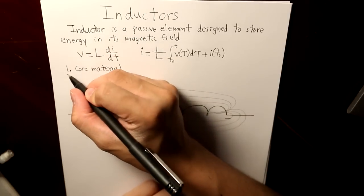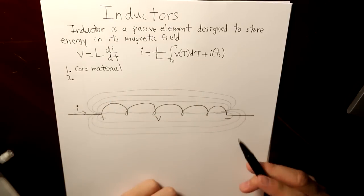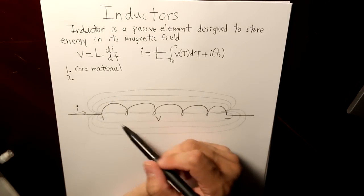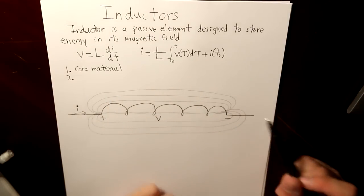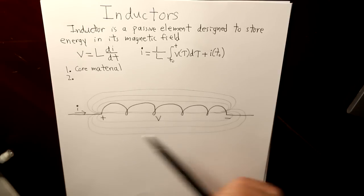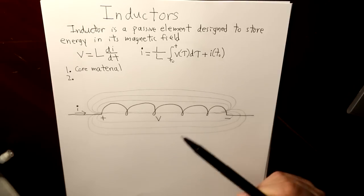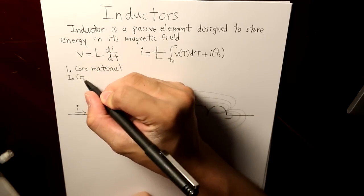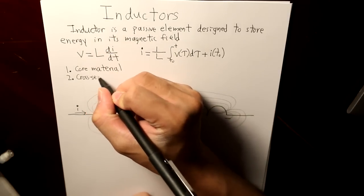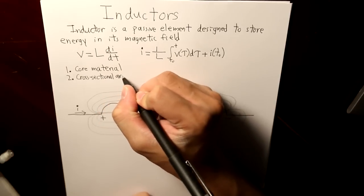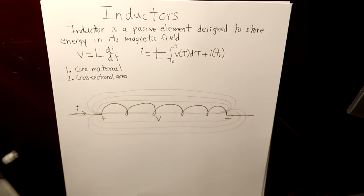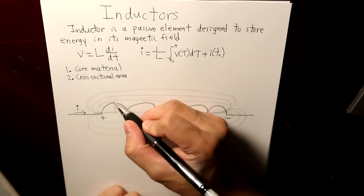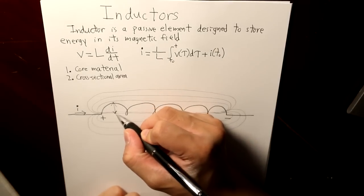The second thing is the cross-sectional area of that coil. How large, how wide that coil is. So, cross-sectional area, and that would simply be this part.